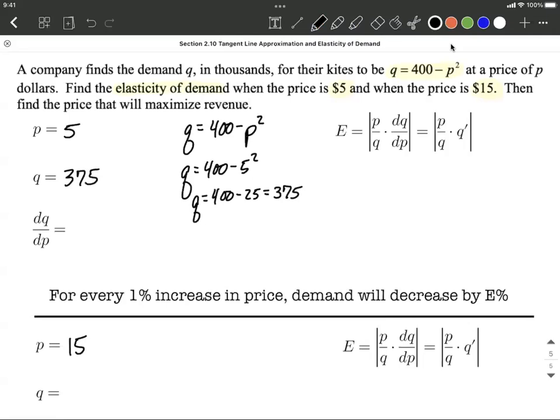The next thing we need is dq/dp. dq/dp is equivalent to q prime, and we'll evaluate this at 5 for this specific one. The derivative of our demand function, we can just use the power rule. The derivative of 400 is 0, but negative 2, and then p next to that. We need to evaluate this at our specific price. In our case, that's going to be negative 2 times 5, which is negative 10, is what we're going to fill into the formula.